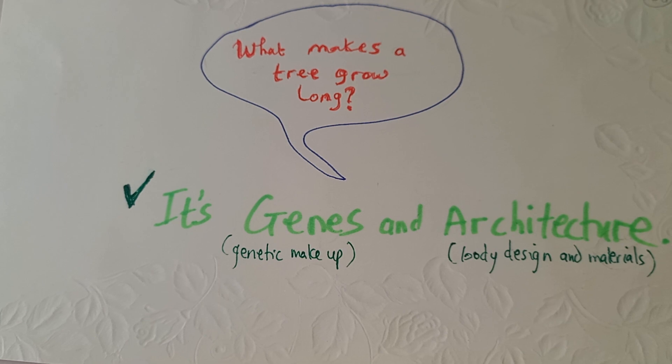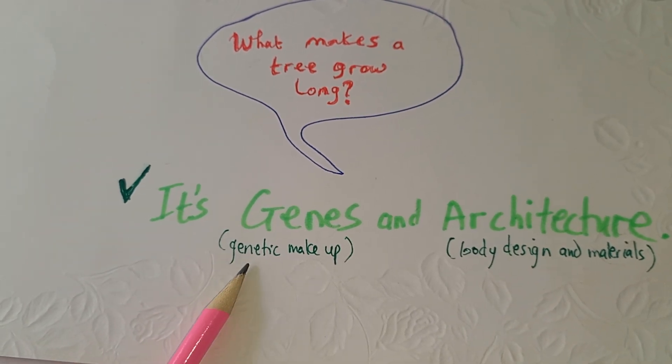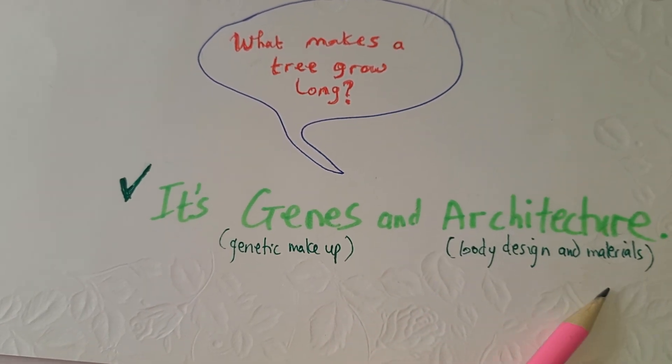Answer: it's genes and architecture. The genes are the genetic makeup. The architecture is the body design and materials.